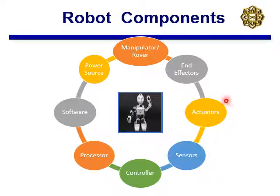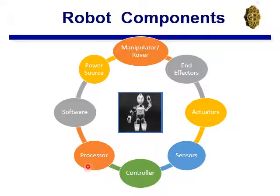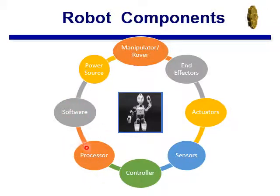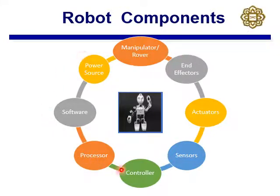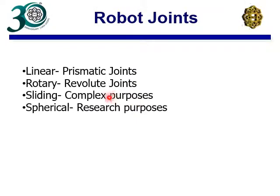You will need a controller to drive all the actuators, analyze all the sensor signals, and based on that, take decisions through the controller. This decision can be implemented to the actuators. The controller has a processor and software, and finally there is the power source. These are the major components of any robotic system.